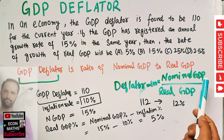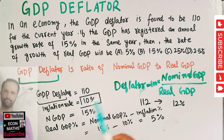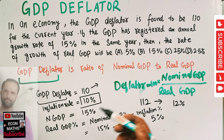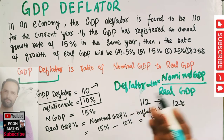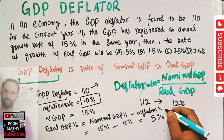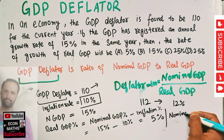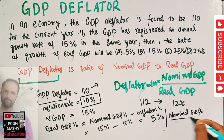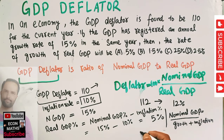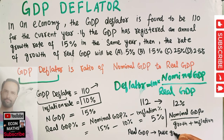We cannot use the deflator formula directly because the variables are given in percentage form. The GDP deflator of 110 has been converted into percentage form — by GDP deflator we simply mean the inflation rate. Real GDP shows us purely the growth, while nominal GDP shows us inflation plus growth. So nominal GDP is always equal to growth plus inflation, and when we subtract the inflation rate from the nominal GDP we get the real GDP. Simple thing.